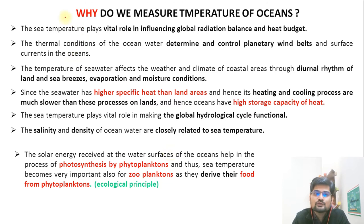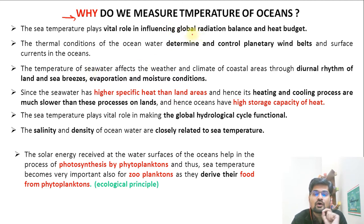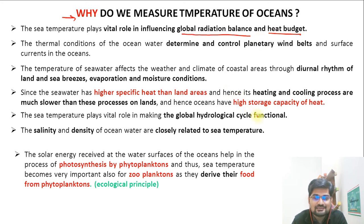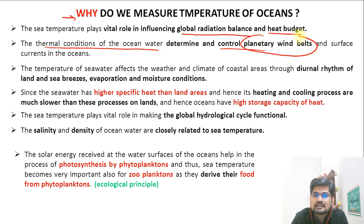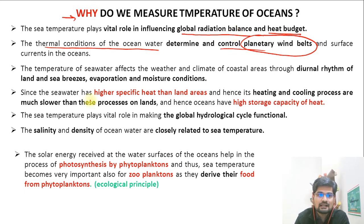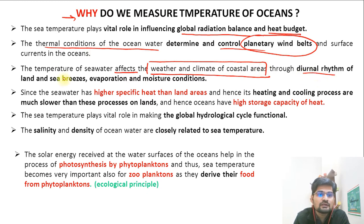Why do we need to measure ocean temperature? Sea surface temperature plays a vital role in understanding the influence of global climatic change, in relation to influencing the global radiation balance, heat budget, and several others. The thermal conditions of ocean water determine the control of planetary winds. The temperature of seawater also affects the weather and climate of coastal areas through diurnal rhythm of land and sea breeze, evaporation, and moisture conditions.